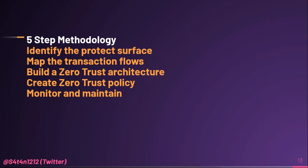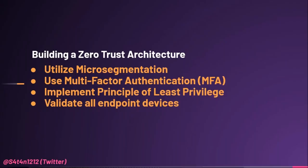The protection surface can consist of identities, endpoints, data, applications, infrastructure, and network. Building a zero trust architecture includes four major steps, the first being utilization of micro-segmentation. Micro-segmentation is the process of breaking up security parameters into small zones to maintain separate access for separate parts of the network. For example, a network utilizing micro-segmentation may contain dozens of separate secure zones — a person or program with access to one zone will not be able to access any other zones without separate authorization.